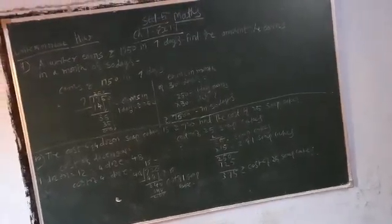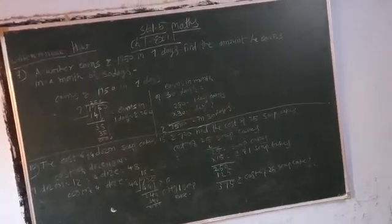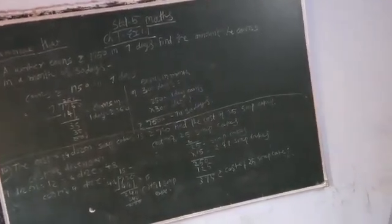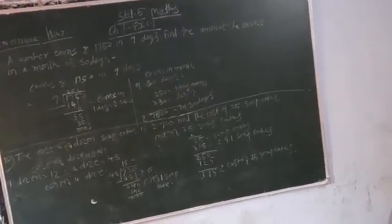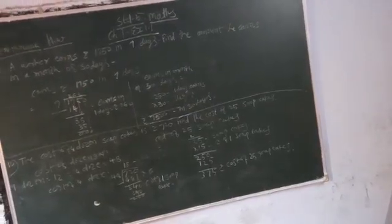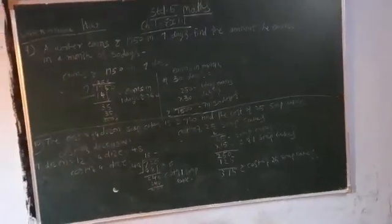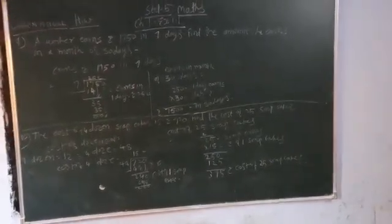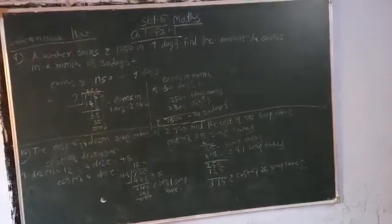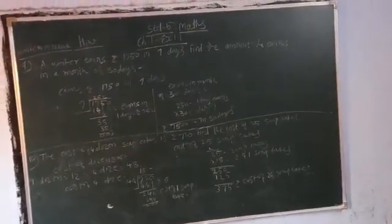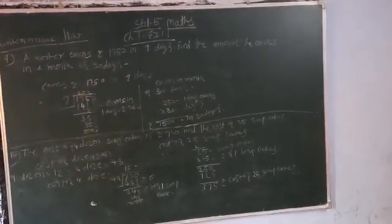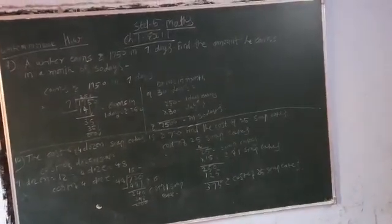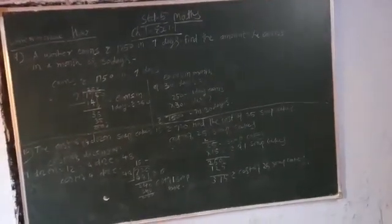So we divide 720 by 48 to find the price per soap, which is 15 rupees. Then multiply 15 by 25 to get 375 rupees for 25 soaps.